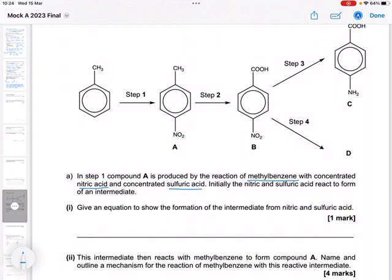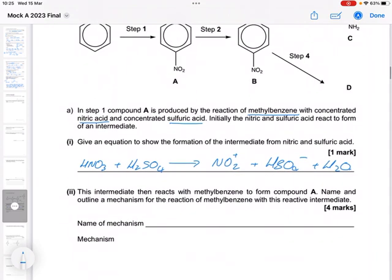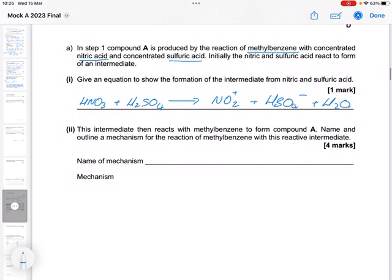Okay, so it's given equation to show the formation of the intermediate form between nitric acid and sulfuric acid. The wording is a bit odd there, but it is essentially the reaction between nitric acid and sulfuric acid, and you should know your mechanisms. So this makes NO2+ plus HSO4- plus H2O. The name of this mechanism is Electrophilic Substitution.